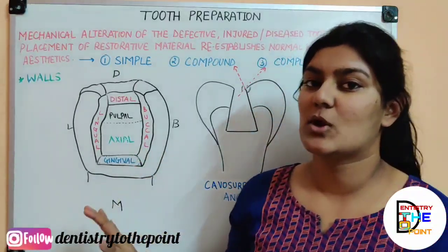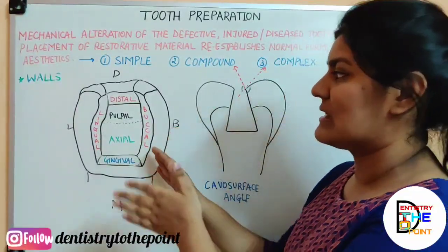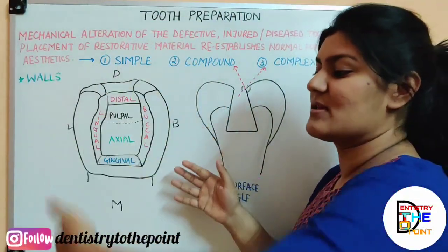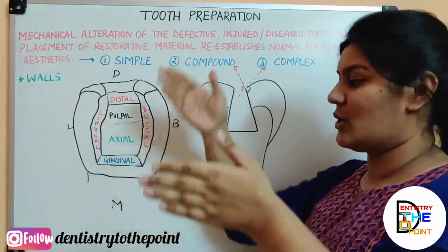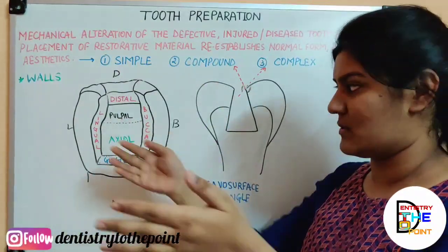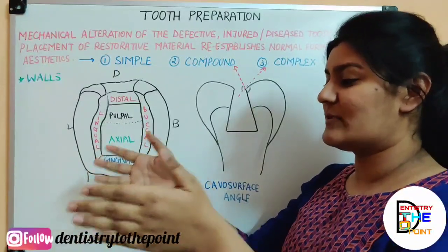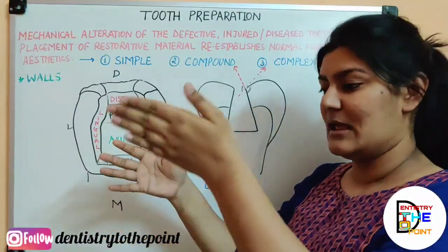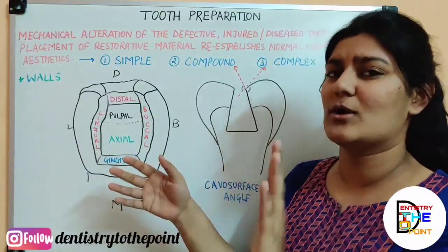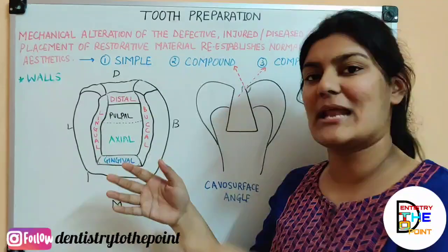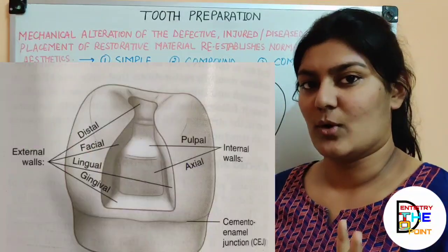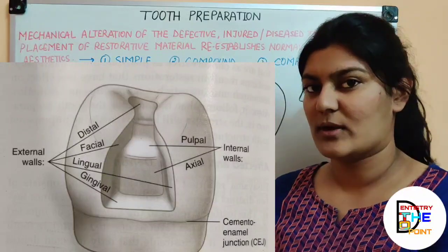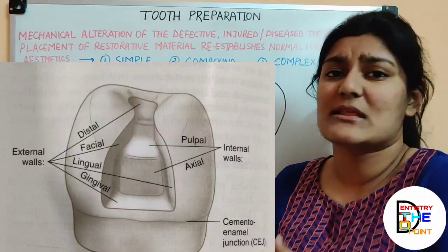Moving on to the walls — these are terminologies very important from the tooth preparation point of view. There are two types of walls: internal walls and external walls. External walls extend to the external tooth surface and take the name of the adjacent surface — for example, distal wall, mesial wall, lingual wall, buccal wall and gingival wall. Internal walls do not extend to the external tooth surface — they are present within the tooth.